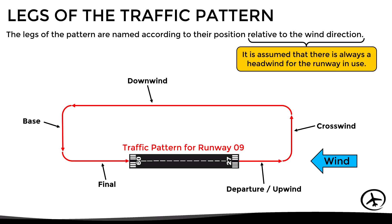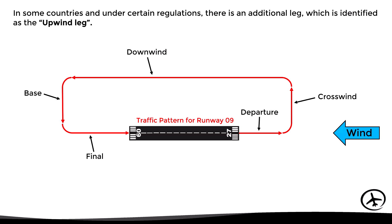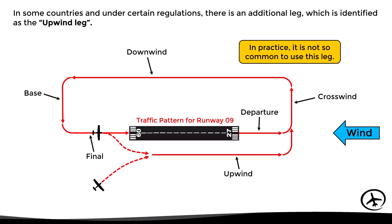In some countries and under certain regulations there is an additional leg identified as the upwind leg. This one is parallel to the departure leg and in theory it would be used in case of a go-around, to avoid conflicts with other departing aircraft, or it could also be used by arriving traffic to join the pattern from this direction. However, in practice it is not so common to use this leg.